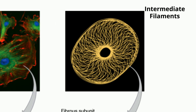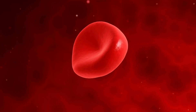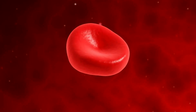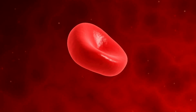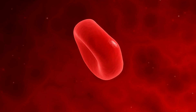Intermediate filaments are medium in length and they help maintain the shape of the cell. For example, a red blood cell has a unique donut shape, and the cytoskeleton filaments help produce this unique shape.